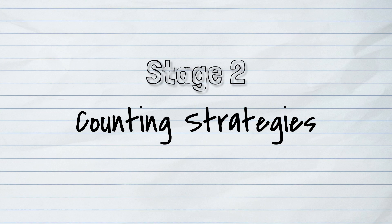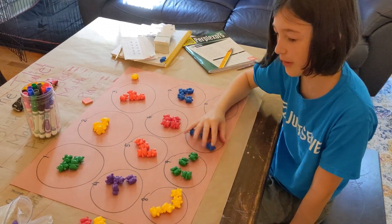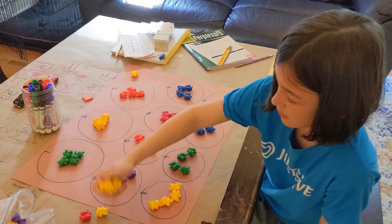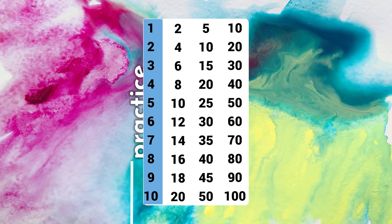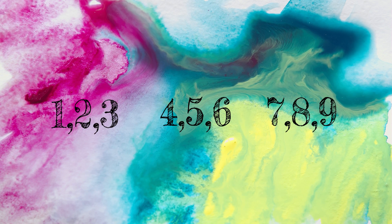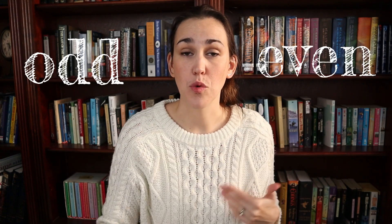The second stage is counting strategies. This is where they're using manipulatives to find the answer — actually playing out the answer, counting out the problem in real time individually. This is the time to really step up skip counting, because eventually you want them to transition from counting individually to counting in groups. Once you practice skip counting, you can point out different patterns — like odds and evens — and pointing those out makes skip counting more intuitive.